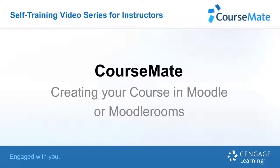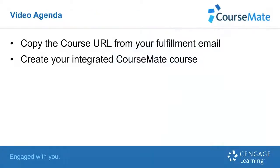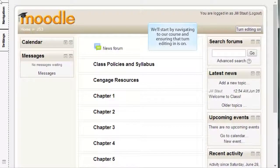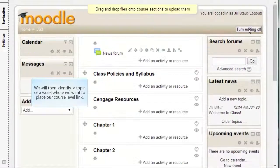Welcome to this self-training video for CourseMate, creating your course in Moodle or Moodle Rooms. In this training, we will copy the course URL from your fulfillment email and create your integrated CourseMate course. We'll start by navigating to our course and ensuring that turn editing is on. We will then identify a topic or a week where we want to place our course level link.